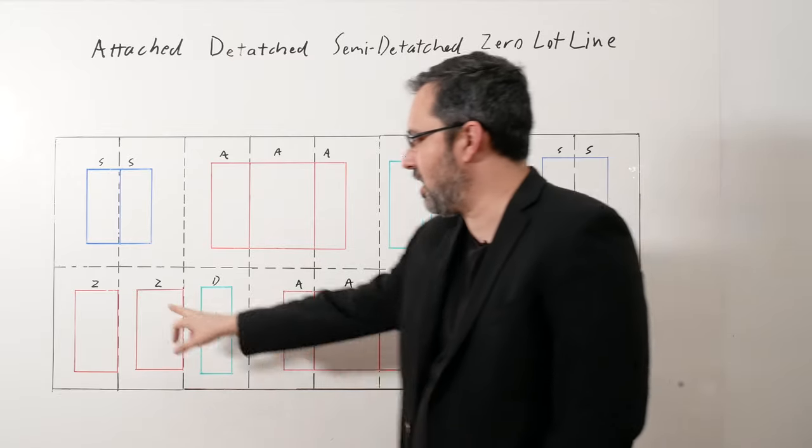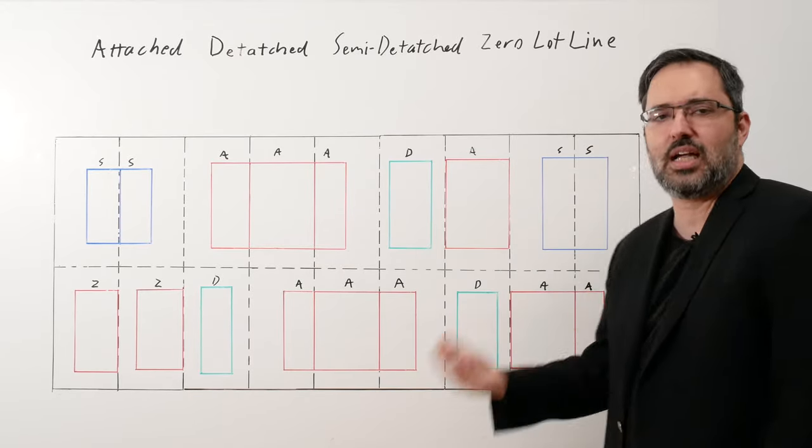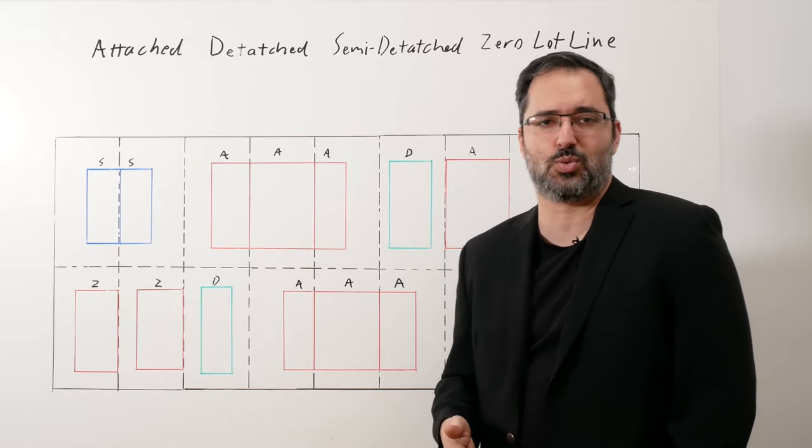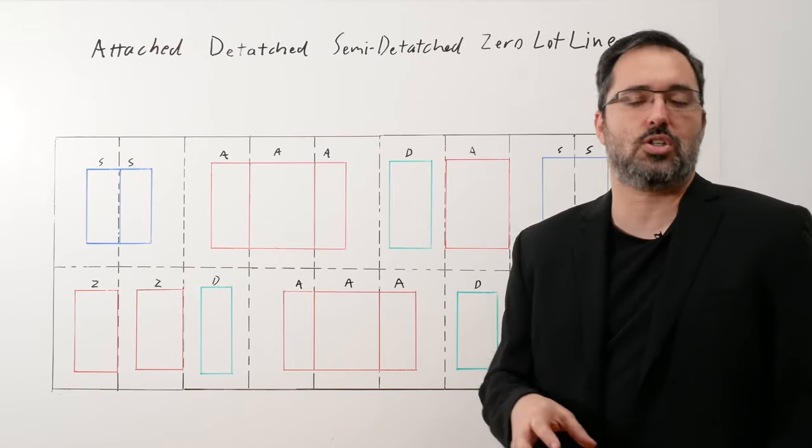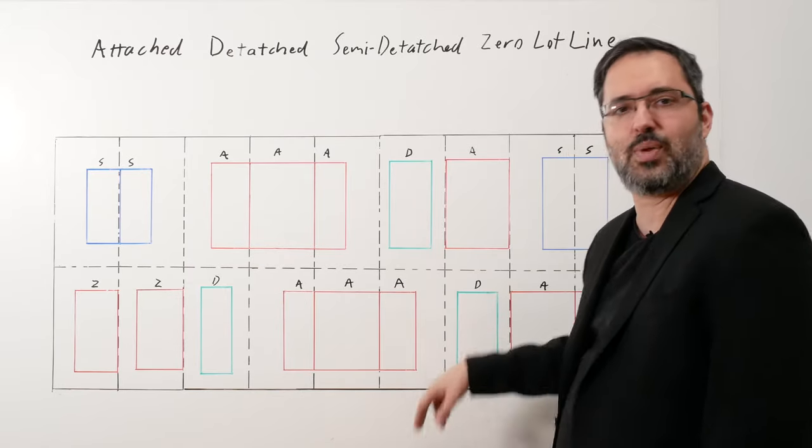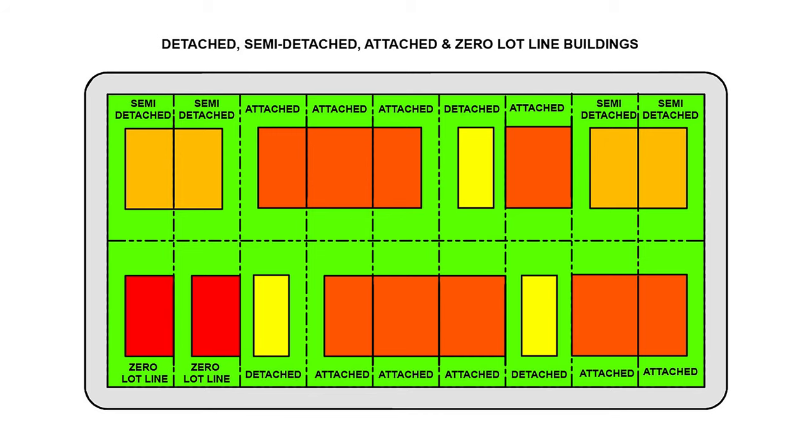But in a lot of cases, you can. If you have a zero lot line or an attached like this, could you attach to that building? In a lot of cases, you can. There's generally no rules that say you can't block your neighbor's windows unless you have an easement. But certain zoning codes will require a side yard, depending on what zoning district you're in. So that's important to figure out.